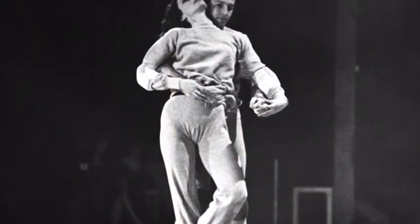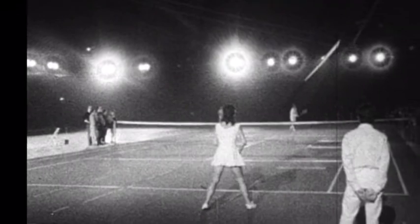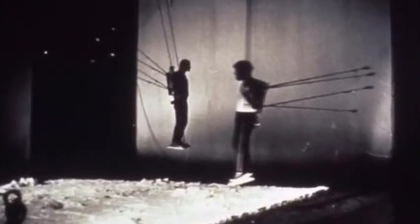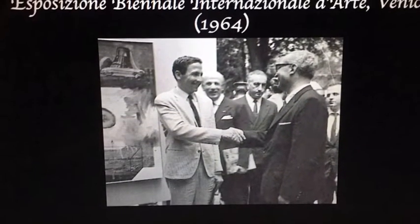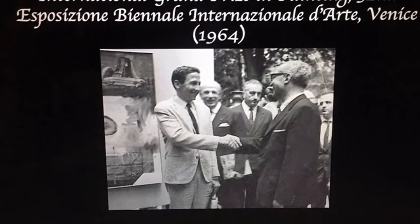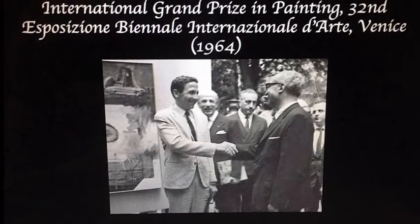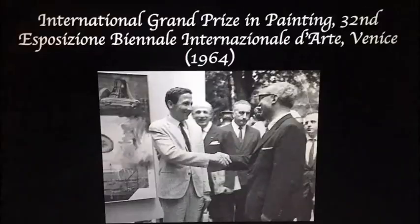Rauschenberg goes on to challenge himself in many different art forms, such as performance arts, in his hugely anticipated Pelican Act of 1963 and Open Score in 1966, which took nine evenings to perform. In 1964, Rauschenberg became the first American to win the International Grand Prize in Painting at the 32nd Esposizione Internazionale in Venice, and he received many other awards throughout his lifetime.